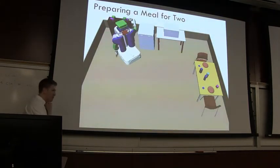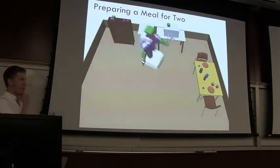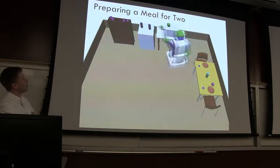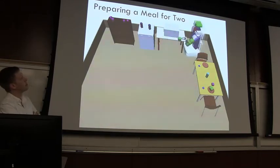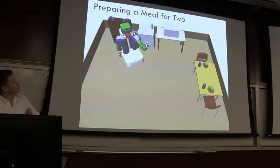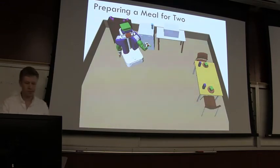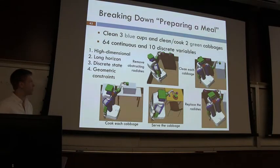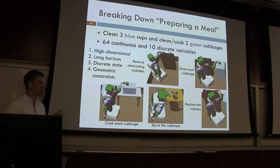Here's a more complex example showing high dimensionality and long horizons: the goal is to cook a meal for two — prepared cabbage (green blocks) — requiring cleaning by placing on the dishwasher and cooking by placing on the microwave. Pink radishes in the corner obstructed the robot from initially retrieving the cabbage, so the robot moved them out of the way, then returned them to their initial configurations as a goal condition for a tidy kitchen. This problem had 64 continuous variables and 10 purely discrete variables, with collision constraints, discrete sub-goals, and complex sequencing — all solved by the same algorithm.